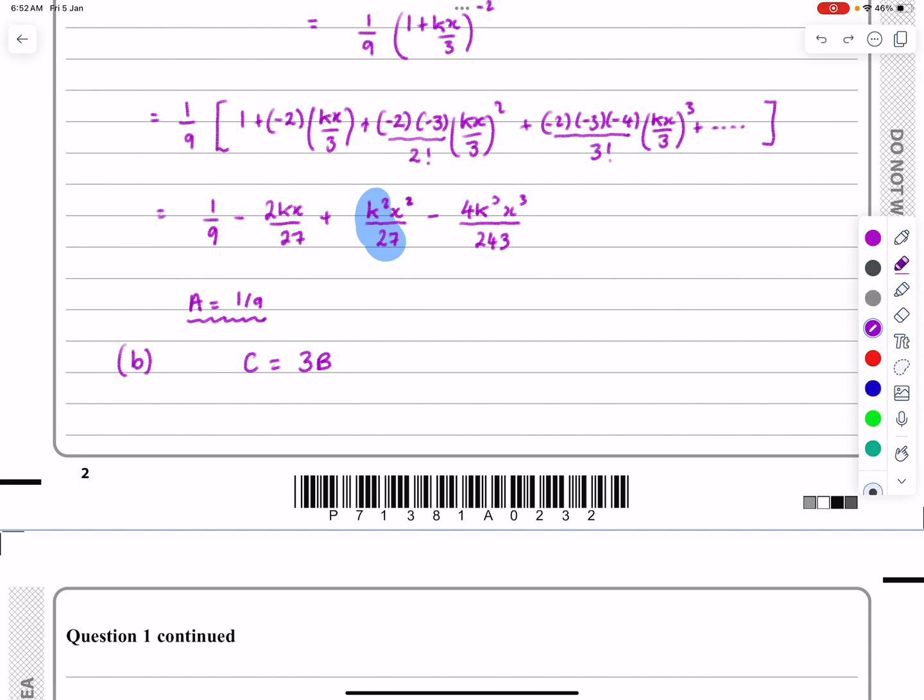we're going to get that k squared over 27 is equal to three lots of minus two is minus six, k over 27. Well, the 27s can cancel straight away, can't they?